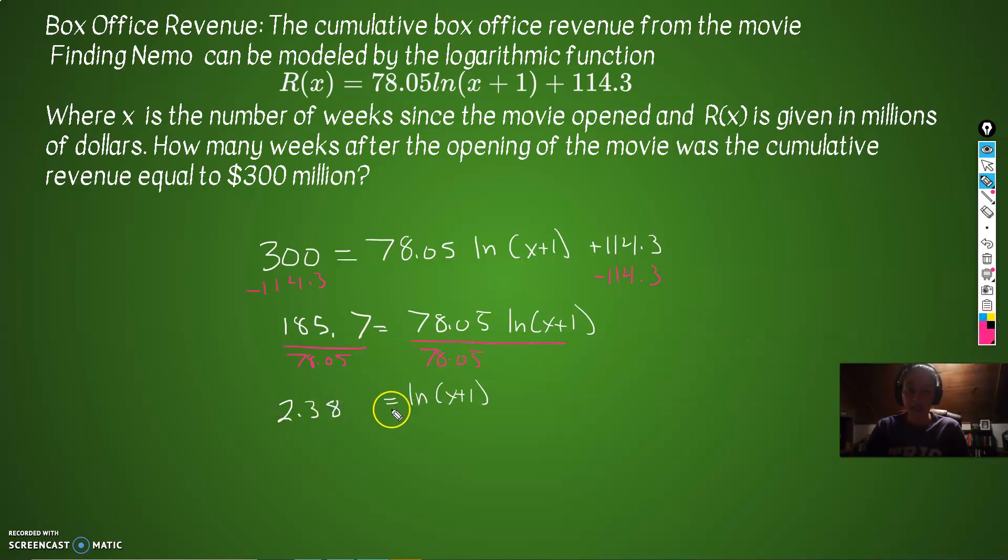Now how do we get rid of the ln? Well, we exponentiate everything with e, because e and ln are inverses of each other. So what is e to the 2.38? That is 10.8. So 10.8 on the left, e and ln cancel, so we have x plus 1 on the right. Subtract 1 from both sides. x equals 9.8.